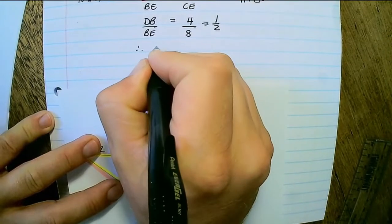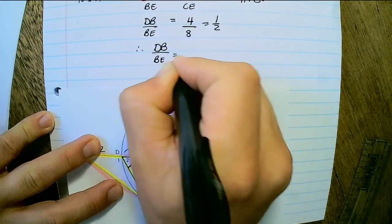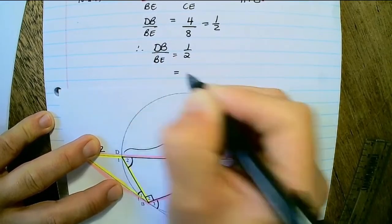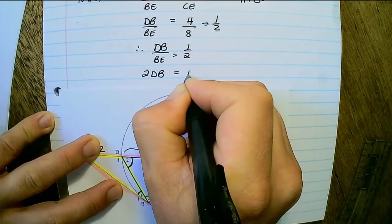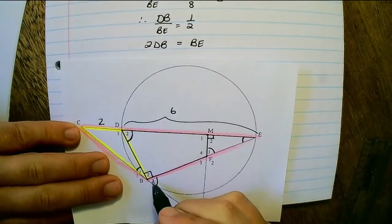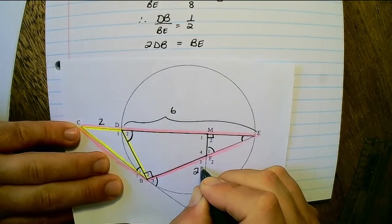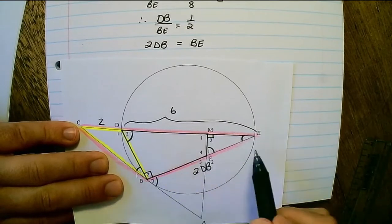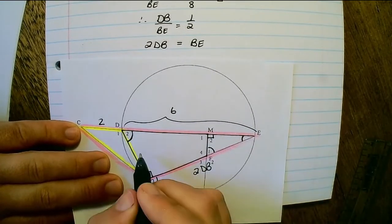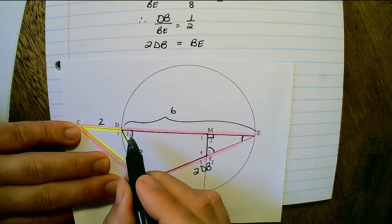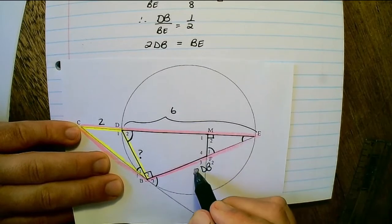Then I can conclude that DB over BE is equal to a half. So therefore, 2DB would be equal to BE, so the length of BE would be 2DB. So in this triangle, I have DE as equal to 6. I want to find this length of DB, but I know that BE is 2DB.